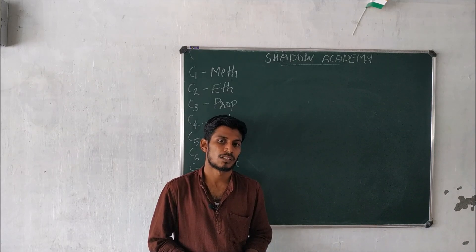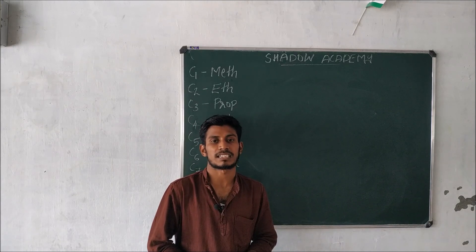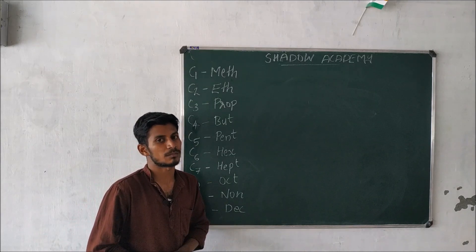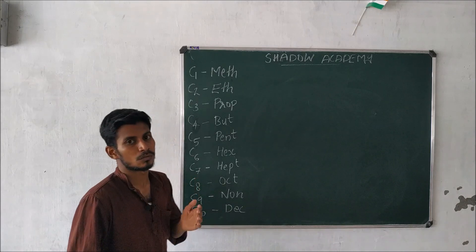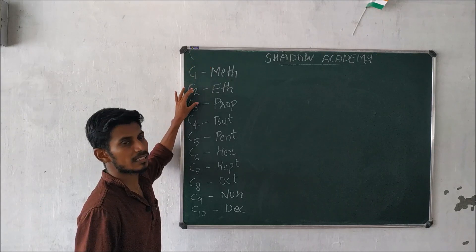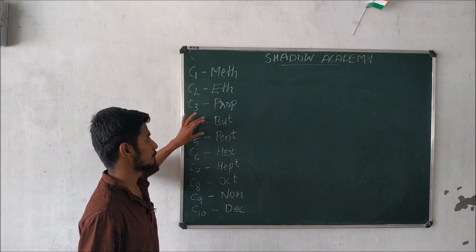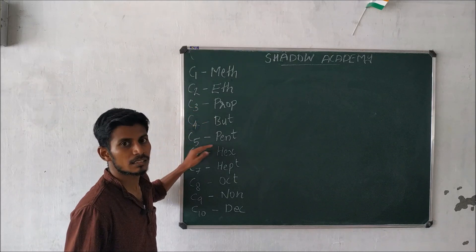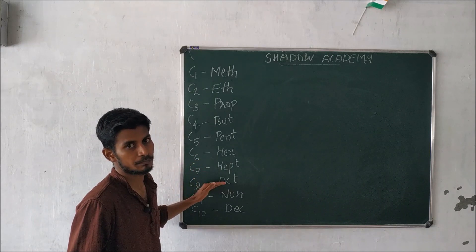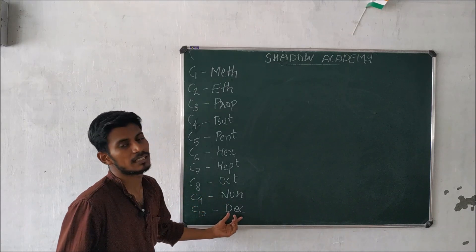We are going to talk about nomenclature and carbon. We have one carbon, 2 carbon, 3 carbon, 4 carbon, 5 carbon, 6 carbon, 7 carbon, 9 carbon, 10 carbon. That is the name of the deck.